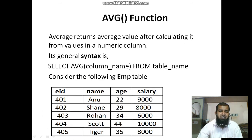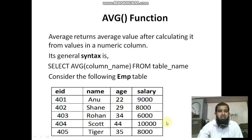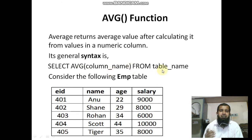First one: AVG function. AVG means average. The AVG function returns the average value after calculating it from values in a numeric column. Average means total divided by the total number of quantities. The syntax is: SELECT AVG(column_name) FROM table_name — sometimes with a WHERE condition as well.